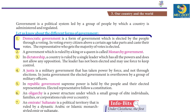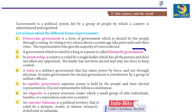1. Democratic government is a form of government which is elected by the people through voting. In voting, every citizen above a certain age takes part and casts their vote. The representative who gets the majority of votes is elected.